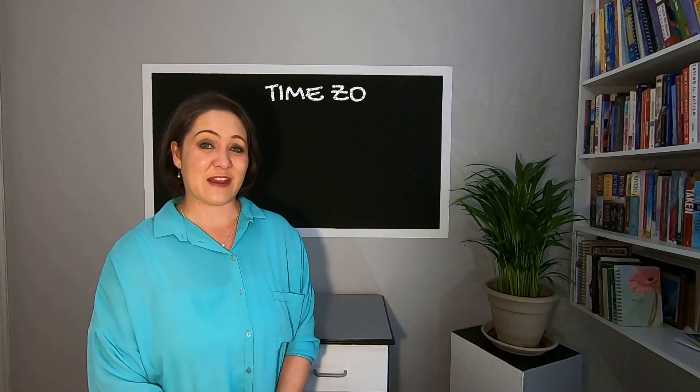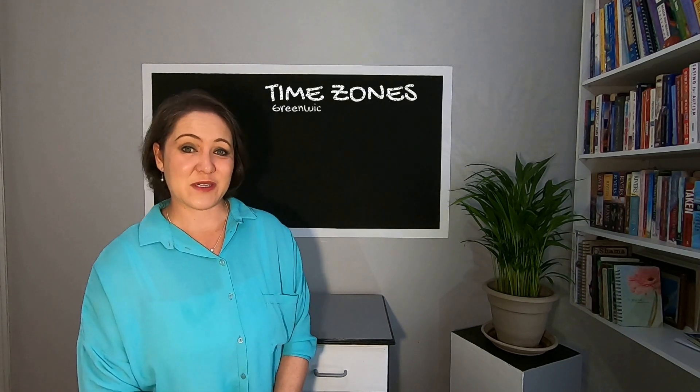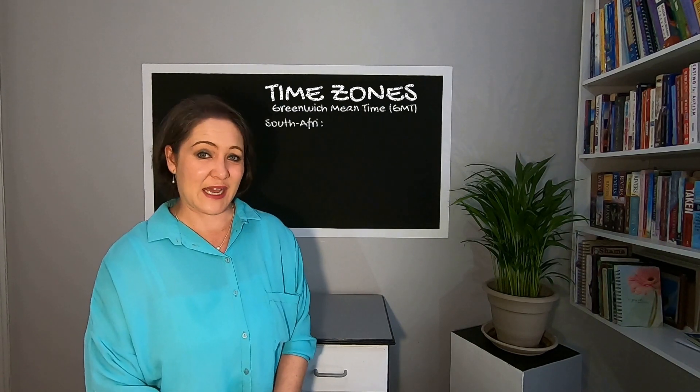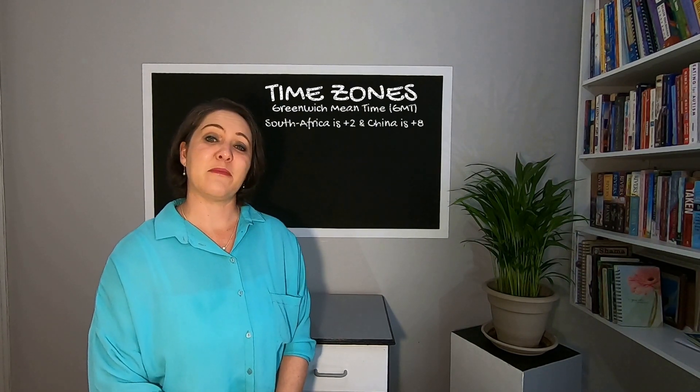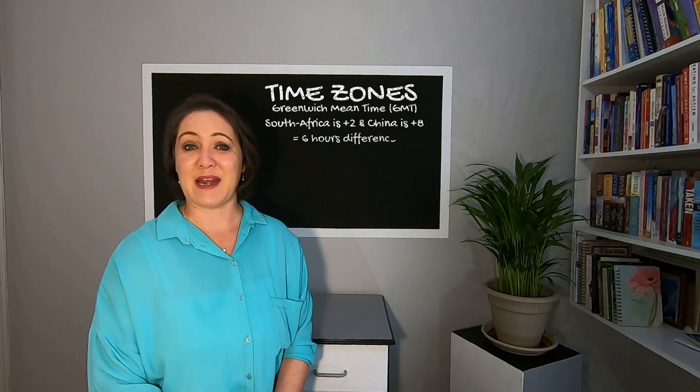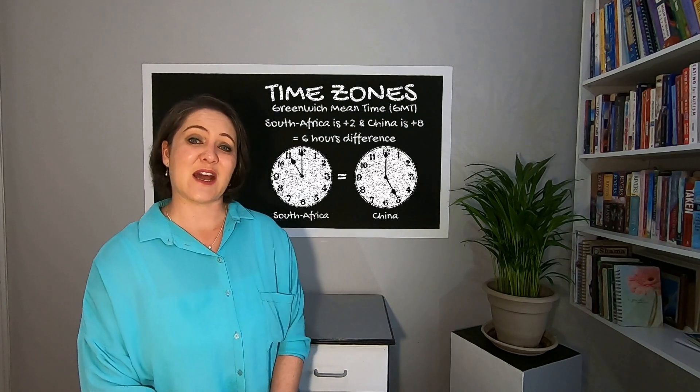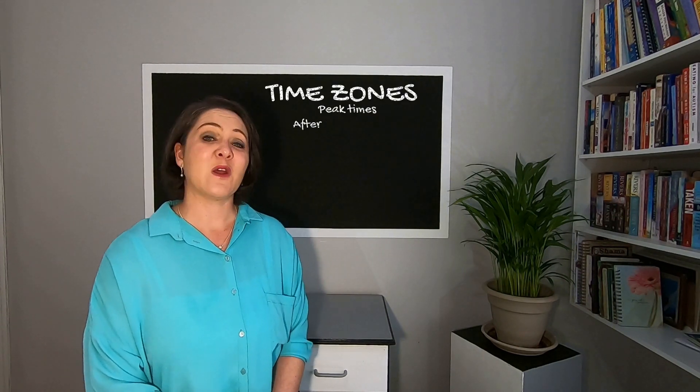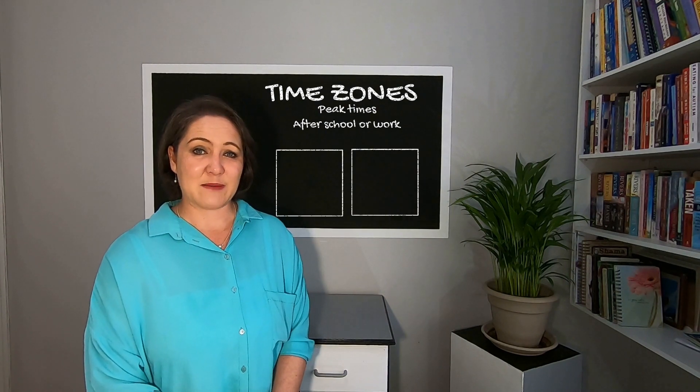The time difference between South Africa and China is six hours. According to the Greenwich Mean Time, South Africa is plus two and China is plus eight. So China is six hours ahead of us. There are two time blocks that you can work as an online English teacher. First is the most common and most popular, which is the China peak times.